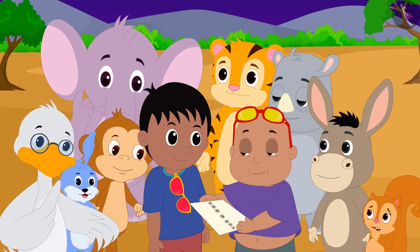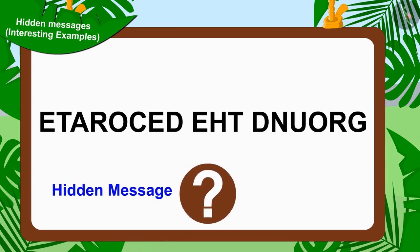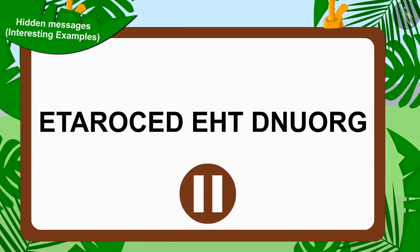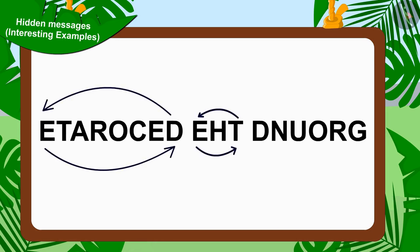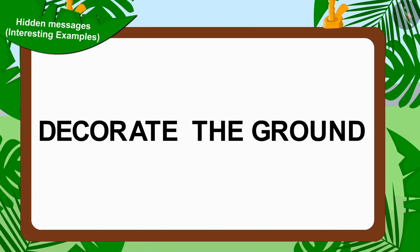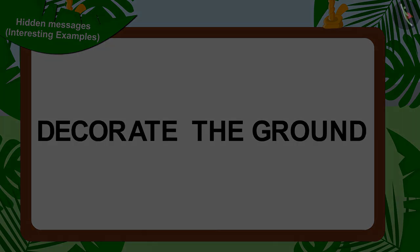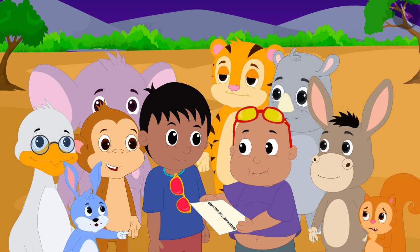All the villagers once again started solving Jeev's hidden message. Children, can you solve this hidden message? If you want, you can find the answer by stopping the video. Well done, kids — your answer is absolutely correct! In this hidden message the alphabets of the words are written in reverse. Jeev's second hidden message is: 'Decorate the ground.' This time Bunny solved Jeev's hidden message and read it to all the villagers.